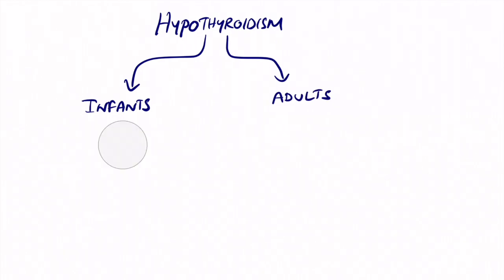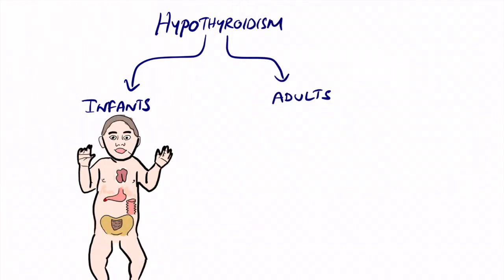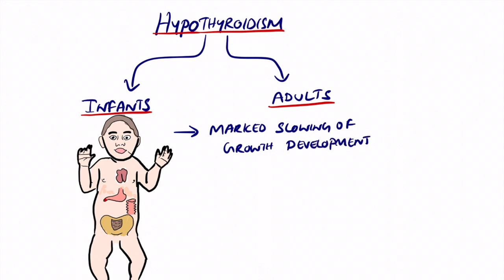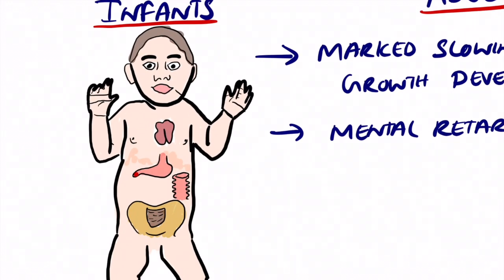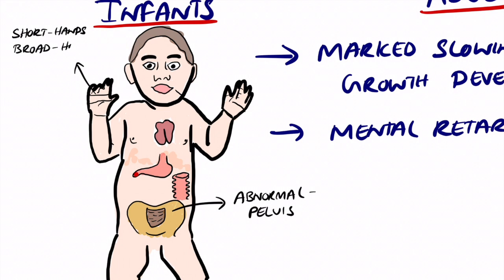Hypothyroidism can be seen in both infants and adults. In infants, it usually causes mental retardation and a decrease in growth development. Other physical signs include abnormal pelvis — these children usually end up with a larger or smaller pelvis than normal — and short or broad hands.